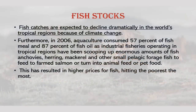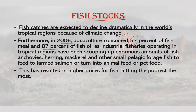Fish catches are expected to decline dramatically in the world's tropical regions because of climatic change. Furthermore, in 2006, aquaculture consumed 57% of fish meal and 87% of fish oil, as industrial fisheries operating in tropical regions have been scooping up enormous amounts of fish. This has resulted in higher prices for fish, hitting the poorest the most.